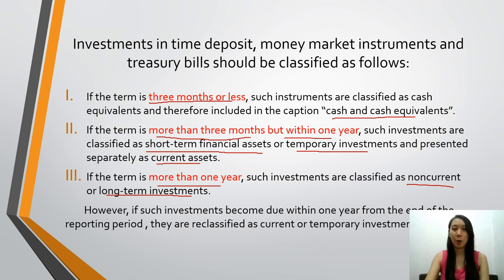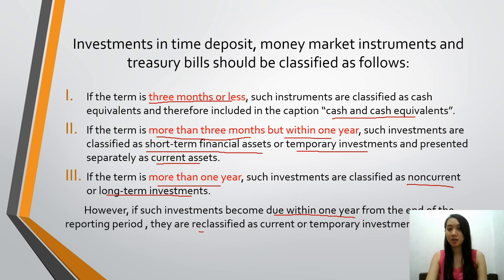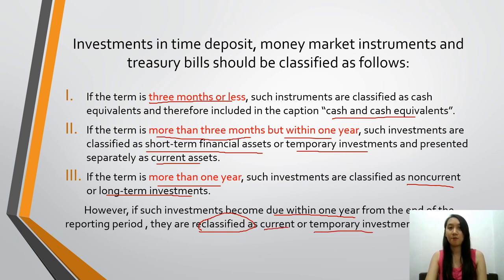However, if such investments become due within one year from the end of the reporting period, they are reclassified as current or temporary investments. So the key differences are: three months or less = cash equivalents; more than three months but within one year = short-term current assets; more than one year = non-current assets. But when they become due within one year, they get reclassified as current.